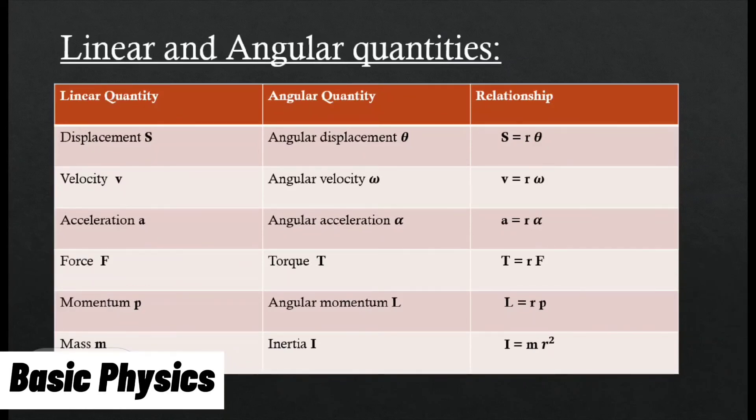τ = rF, where F is the linear quantity and τ is the angular quantity. L = rp, where p is linear momentum and L is angular momentum. I = mr², where I is the inertia of body and r is the radius of object.